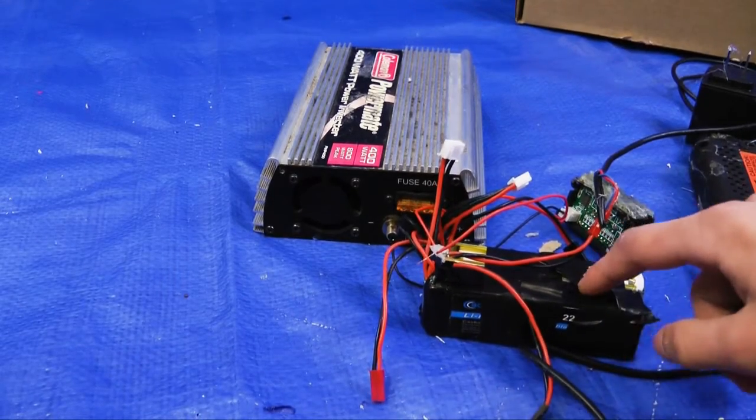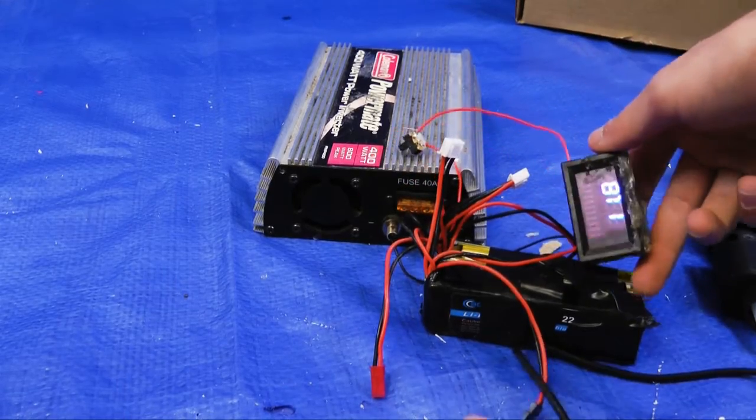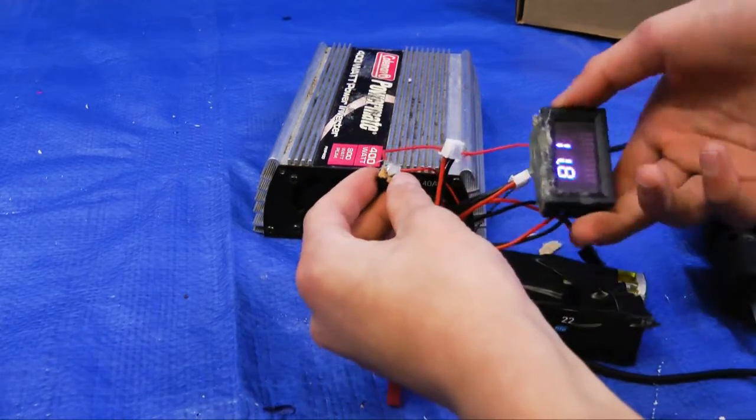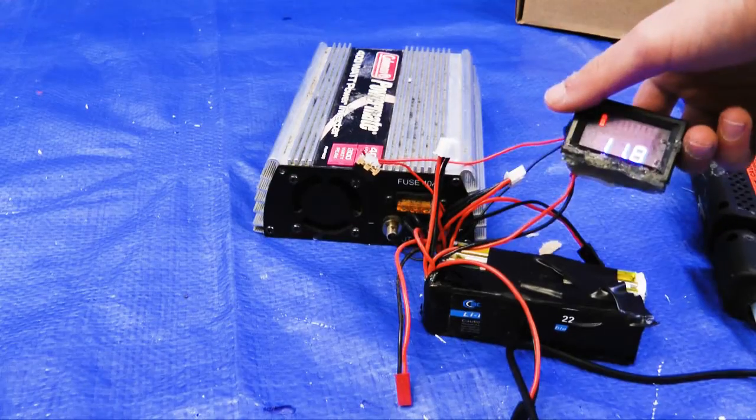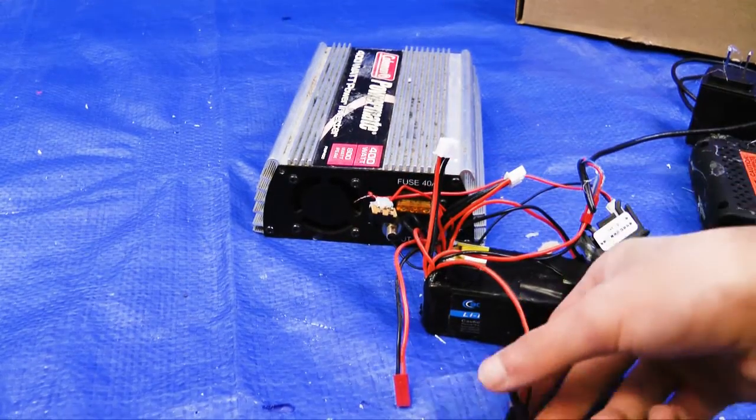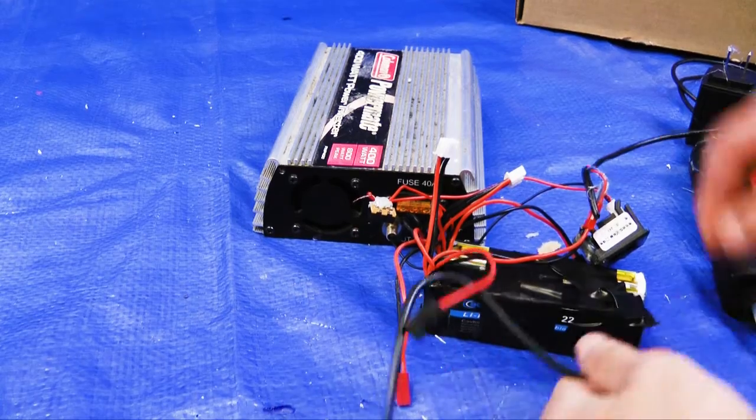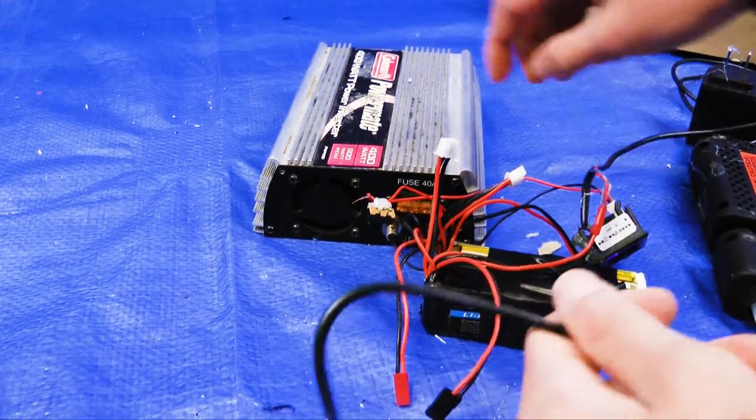These two batteries go to the switch right here which goes to this little gauge that will tell the voltage of the batteries, and then the batteries are connected to a charger and then to the inverter.